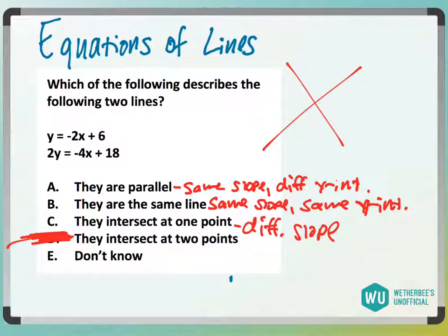So we just need to figure out what's happening with the slope here. This one's already in y equals mx plus b. This one, I'm going to divide everything by two, which is going to give me y equals negative two x plus nine.